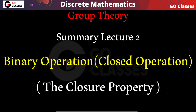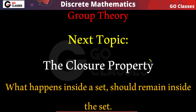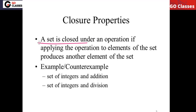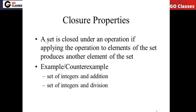We will start with the closure property. The idea of closure property is that what happens inside a set should remain inside the set. A set is closed under an operation if applying the operation on elements of this set produces another element of this set.